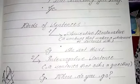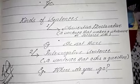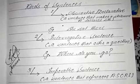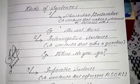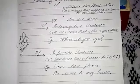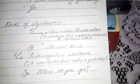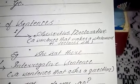Now we are going to read about the kinds of sentences. Basically, there are five kinds of sentences. The first one is the assertive sentence, also called the declarative sentence.